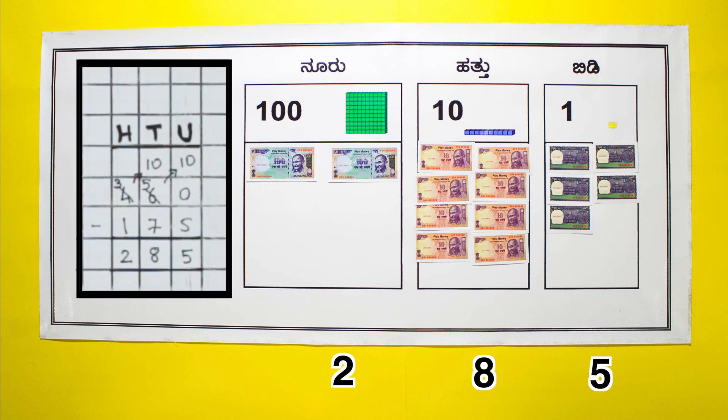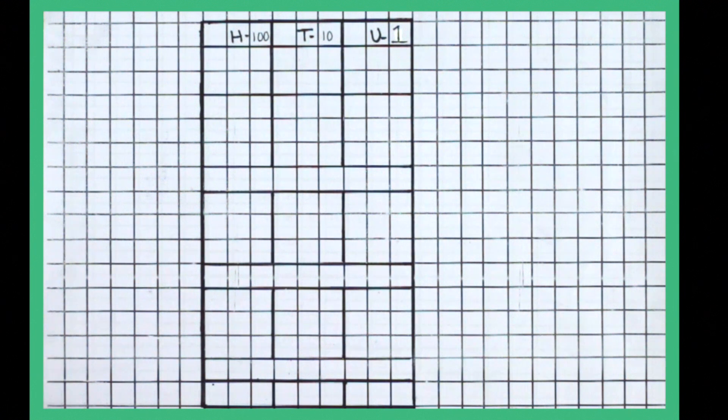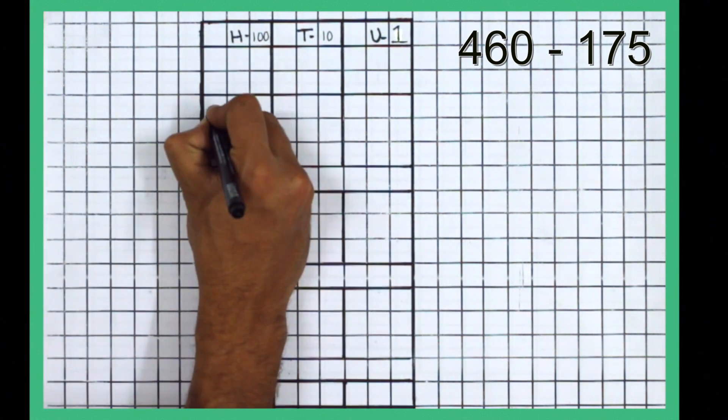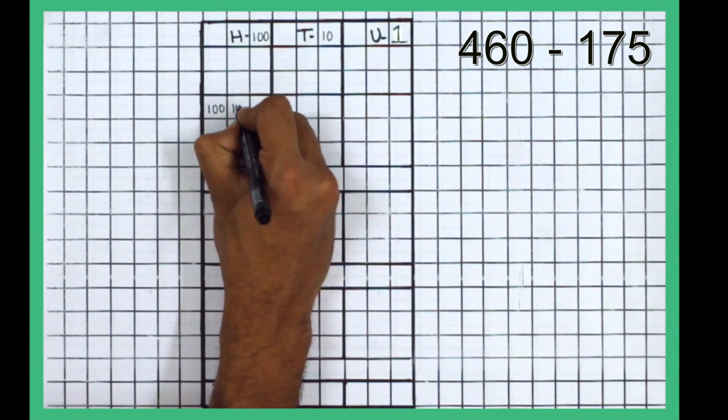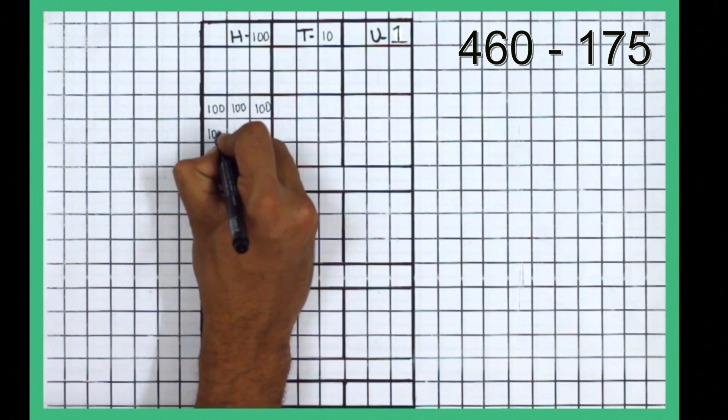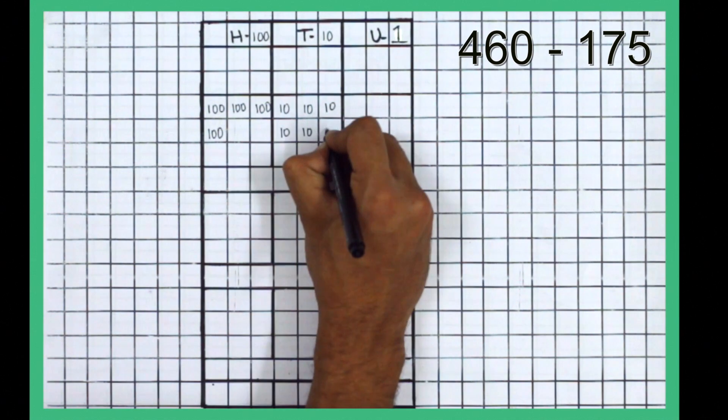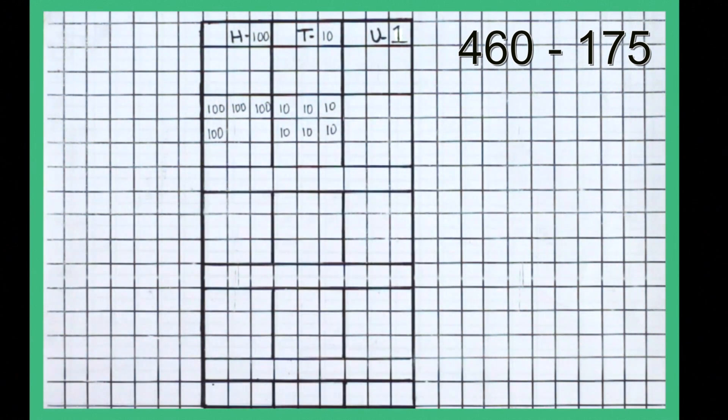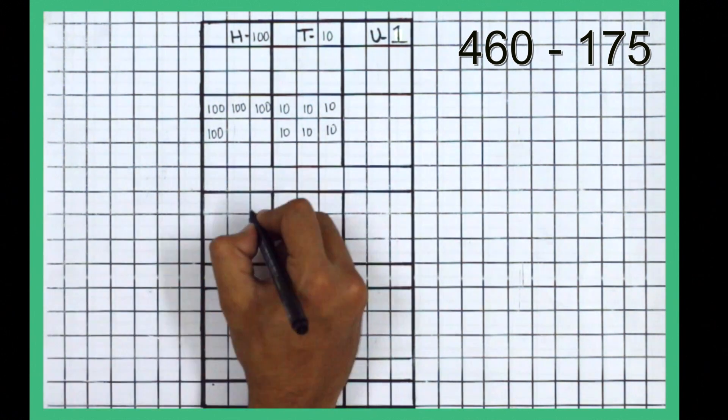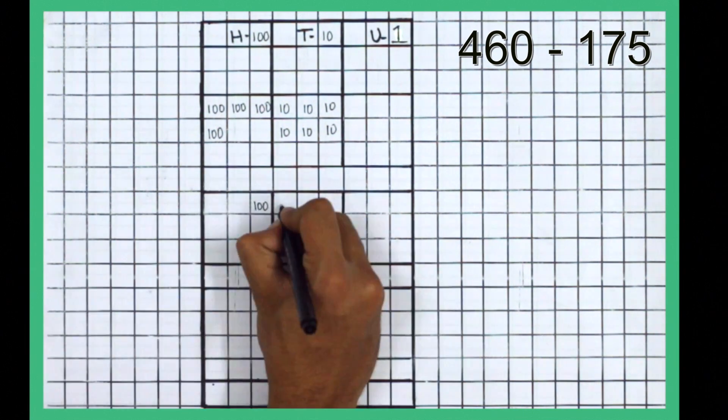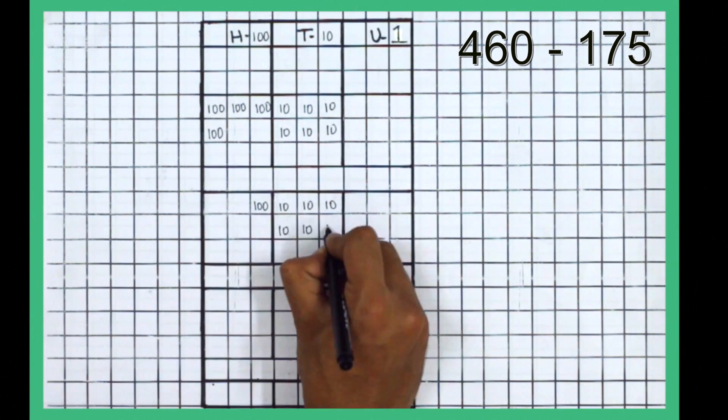Students must move from concrete objects to working with pencil and paper. Place the correct number of hundreds, tens, and ones on a square ruled paper to represent 460. Below it, represent the digits of 175 rupees, the amount to be subtracted.